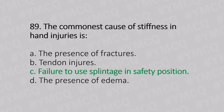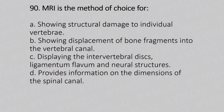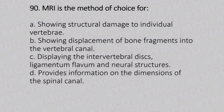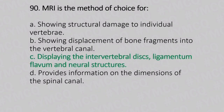Now let's move to question number 90. MRI is the method of choice for. Option A: showing structural damage to the individual vertebrae. Option B: showing displacement of bone fragments into the vertebral canal. Option C: displaying the intervertebral disc, ligamentum flavum, and neural structures. Option D: provides information on dimensions of the spinal canal. And the answer is Option C, displaying the intervertebral disc, ligamentum flavum, and neural structures.